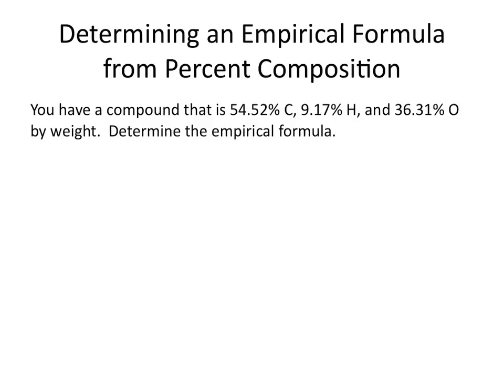Let's look at an example of how to determine an empirical formula given the percent composition of a substance. You have a compound that is 54.52% carbon, 9.17% hydrogen, and 36.31% oxygen by weight. Determine the empirical formula.